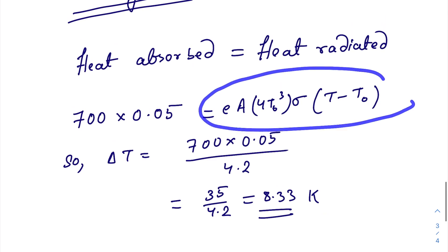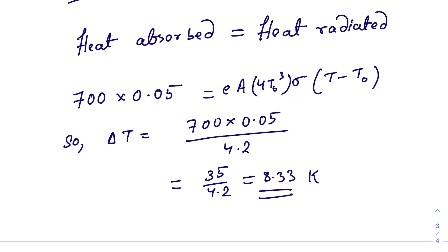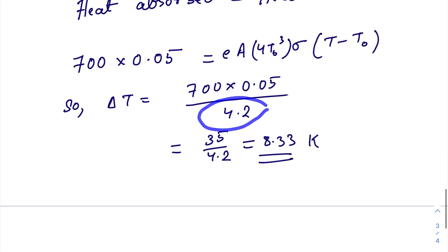I placed it here. We have already calculated this constant, this part as 4.2. Just we will put 4.2 here. We need to find out the temperature difference in the steady state. That del T is equal to this one divided by 4.2. After calculating, you get 8.33.